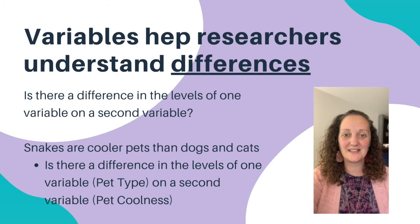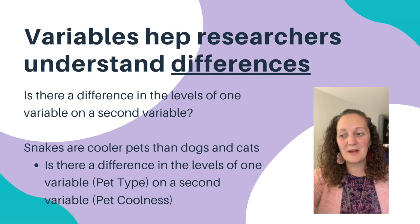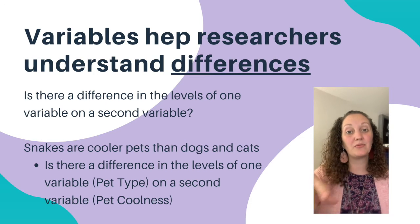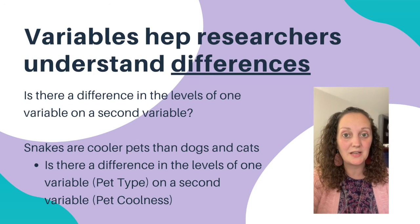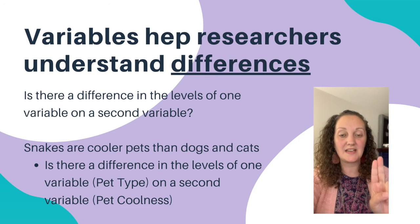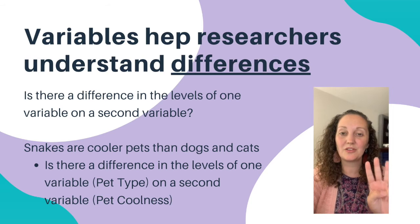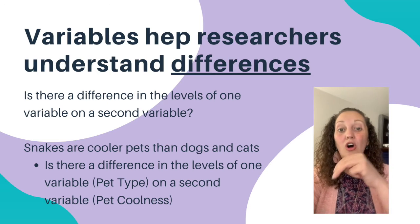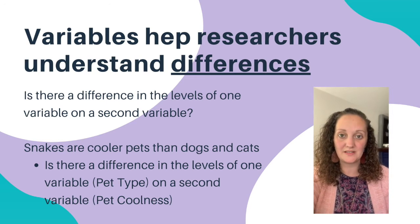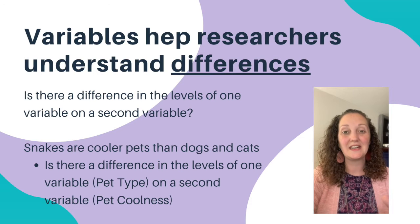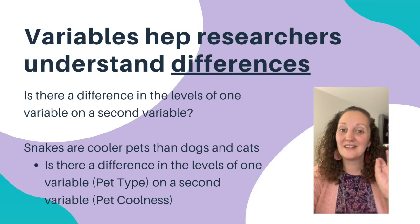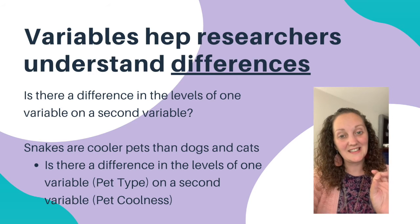So here's my sample hypothesis: Snakes are cooler pets than dogs and cats. Here we're looking to see if there's a difference in the levels of one variable — the one variable being pet type: dogs, snakes, cats — on the second variable, ratings of pet coolness. So we're looking to see: is there a difference in coolness ratings between dogs, snakes, and cats?